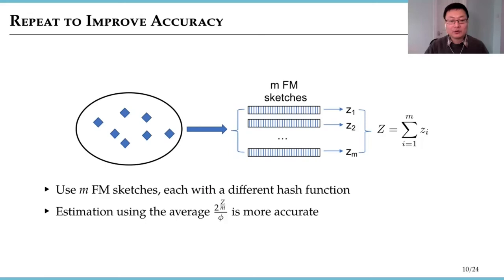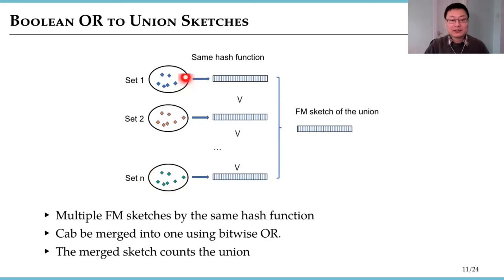One last thing about FM sketch. If we have multiple sets, then for each set we can build an FM sketch using the same hash function. Those FM sketches can be merged together using bitwise OR operation. The result is the FM sketch that counts the union of all sets.